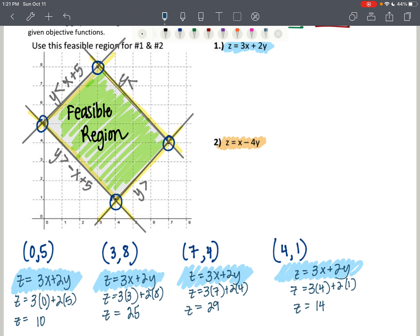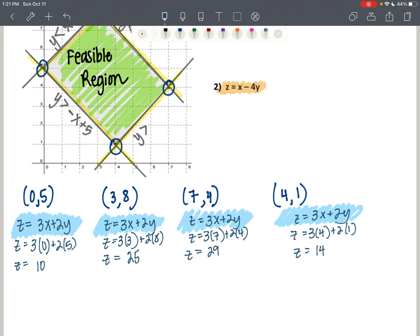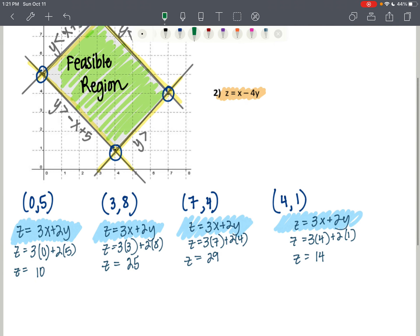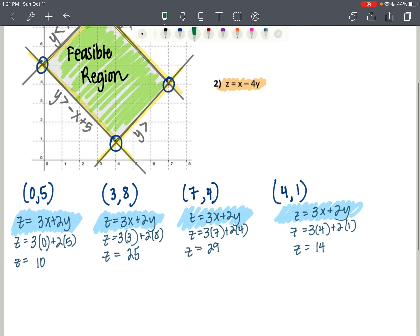So we're looking for a maximum and a minimum. So the maximum is green. This is our max value of z. And our minimum value of z is going to be the 10. So out of 10, 25, 29, 14, 10 is the smallest value, which makes it a minimum. And 29 is the largest value, which makes it a maximum.